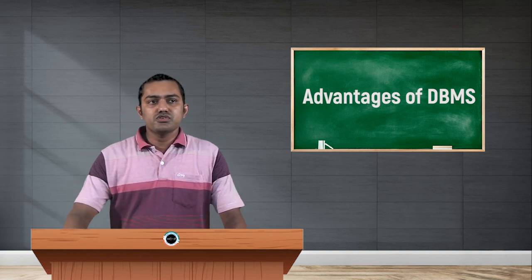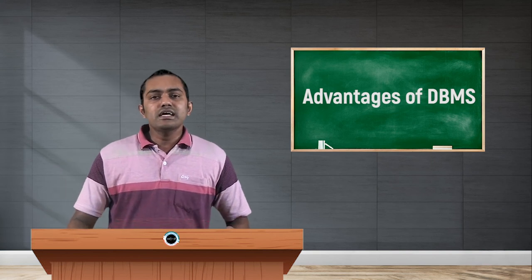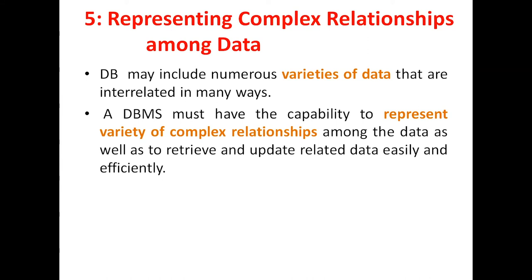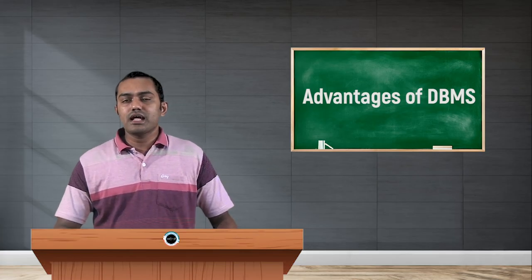The fifth advantage is representing complex relationships among data. Each piece of data may relate to data in another field. In a file management system, we are not able to provide a link between these details. But in the case of a database management system, we can provide links between data and represent or manipulate different sets of relations between data. The database must have the capability to represent a variety of complex relationships among data, as well as to retrieve and update the related data easily and efficiently. This is the fifth advantage of a database management system.